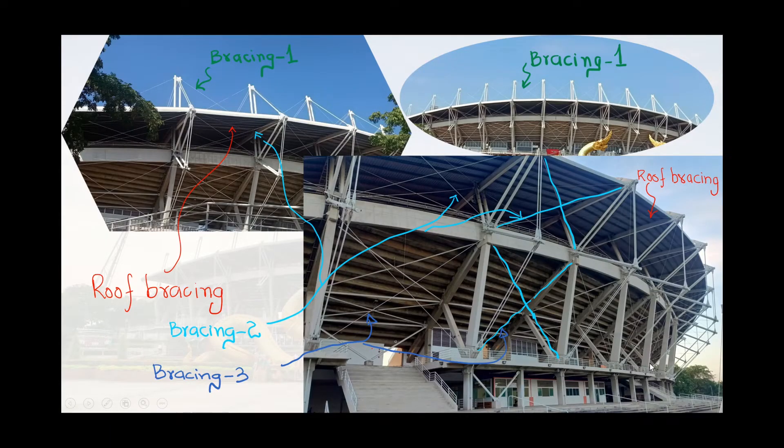Now let's see these bracing in this actual structure. Here you can see the bracing 1 has been labeled. The bracing 1 is the bracing which is laterally supporting the part of compression member that is projecting out of the level of the roof. Here you can also see the roof bracing, bracing 2 and bracing 3. Bracing 1, bracing 2, bracing 3, all of these bracings collect the forces, the lateral forces and transfer them to the RCC structure located at the first level.